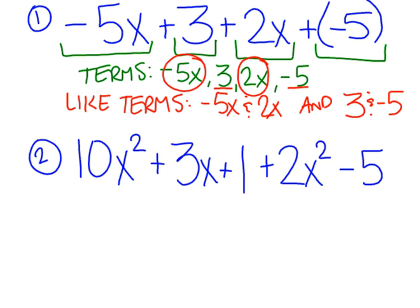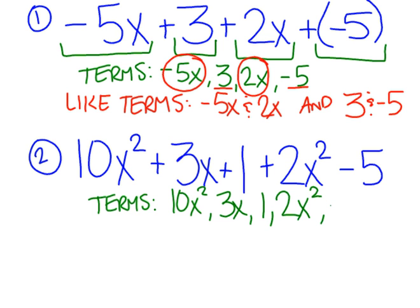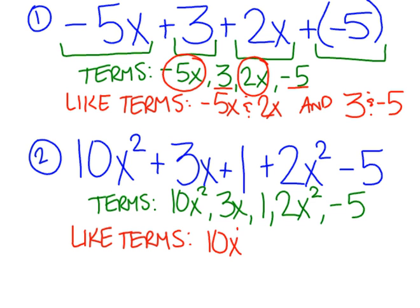Second example: identify the terms in the expression 10x squared plus 3x plus 1 plus 2x squared minus 5. The terms are 10x squared, 3x, 1, 2x squared, and negative 5. Even though this is subtracting 5, we could write it as adding a negative 5. For like terms: 10x squared and 2x squared are like terms because they both have an x squared. 3x doesn't match up with anything. And the constants 1 and negative 5 are like terms.